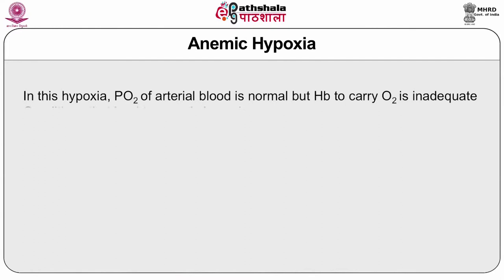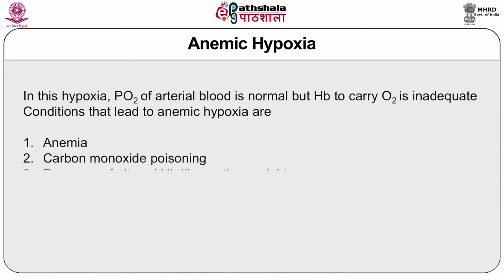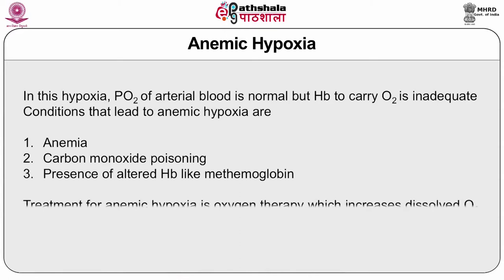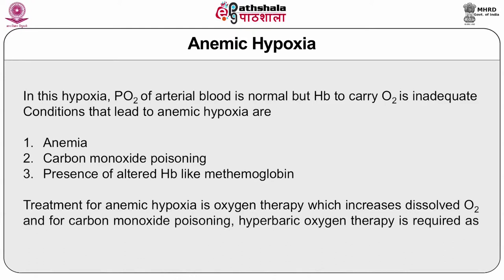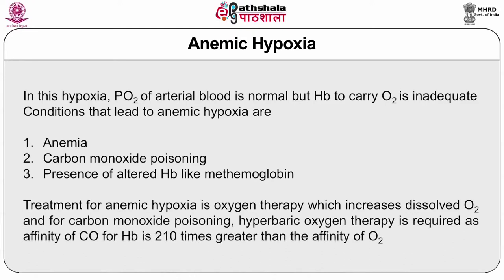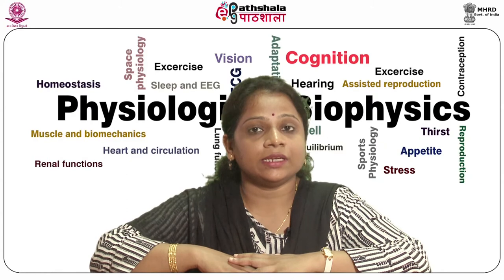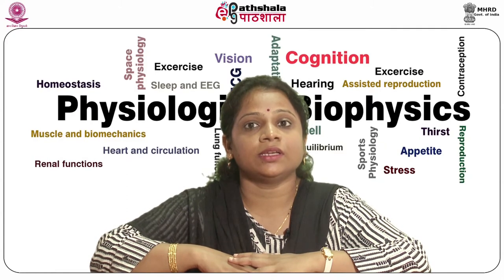In anemic hypoxia, PO2 of arterial blood is normal but hemoglobin available to carry oxygen is inadequate. Conditions include anemia, carbon monoxide poisoning, and presence of altered hemoglobin such as methemoglobin. Treatment of choice is oxygen therapy, which increases dissolved oxygen. For carbon monoxide poisoning, oxygen is given in hyperbaric form, as carbon monoxide has an affinity for hemoglobin 200–250 times greater than oxygen, and hyperbaric oxygen will displace it.